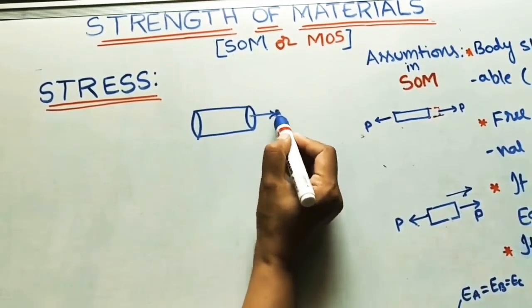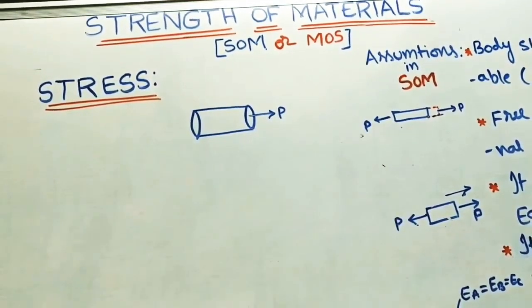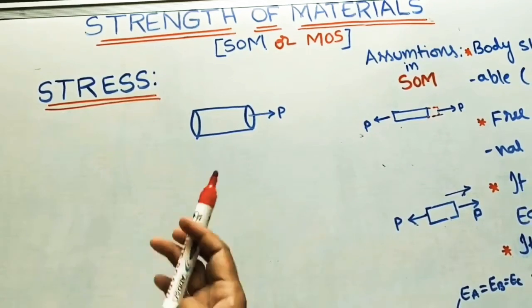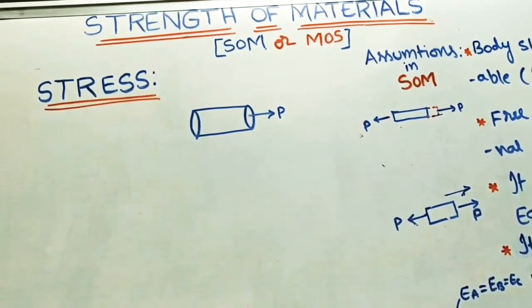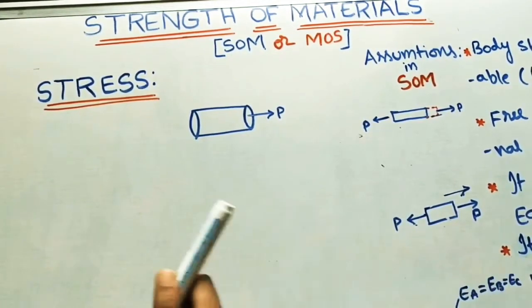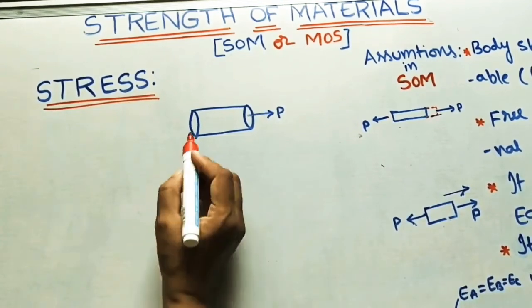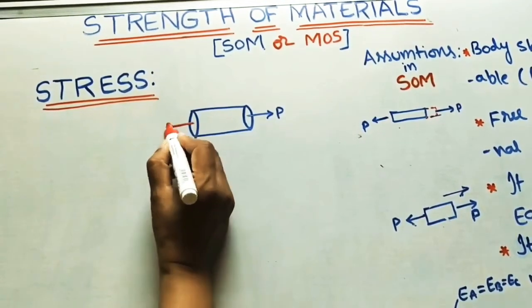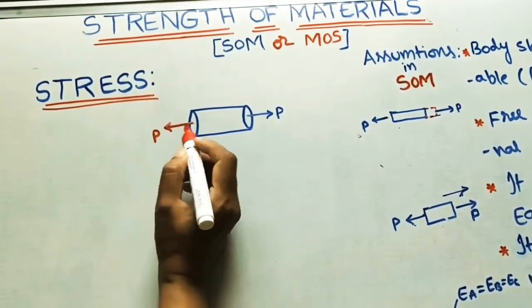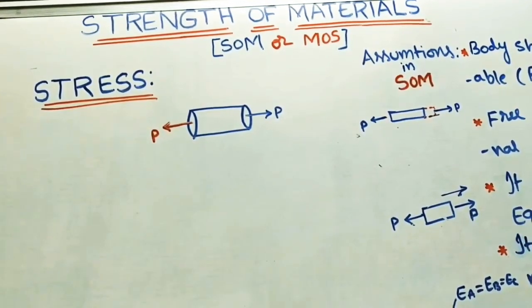Now I am applying some force along this direction. So obviously this object or this body will move in this direction. So our next assumption is we have to make this body in equilibrium means we have to apply the same force in the opposite direction. At that time it is in equilibrium condition.